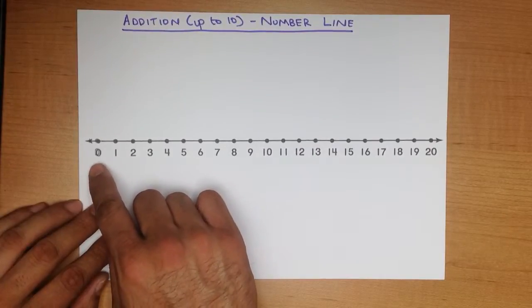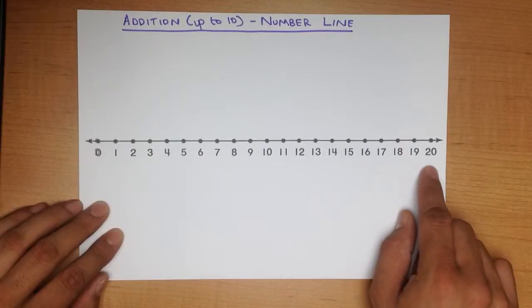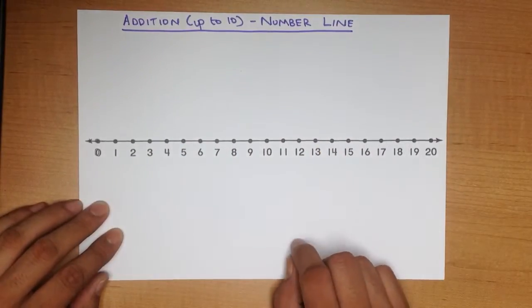It's just a straight line with numbers. In this case, I've done numbers from 0, 1, 2, 3, all the way up to 20, because we're adding numbers up to 10.